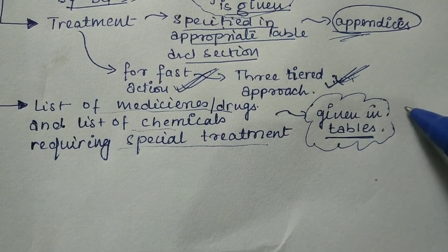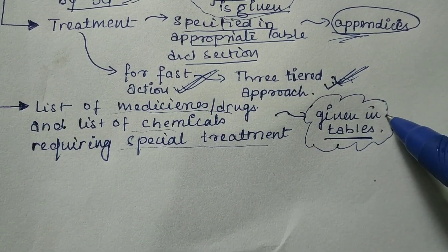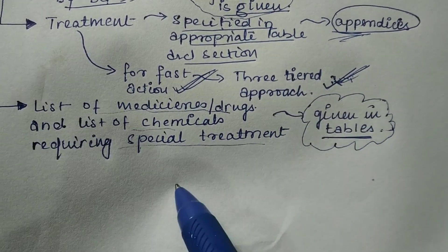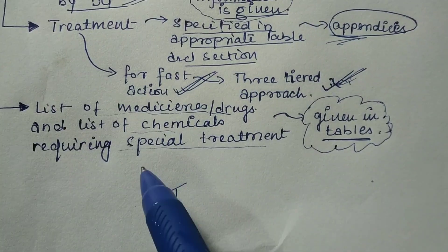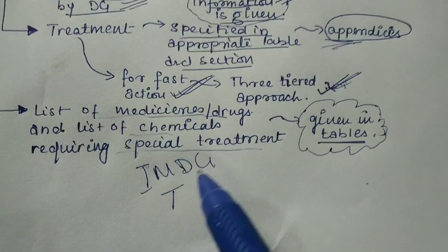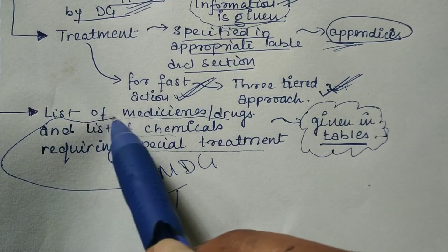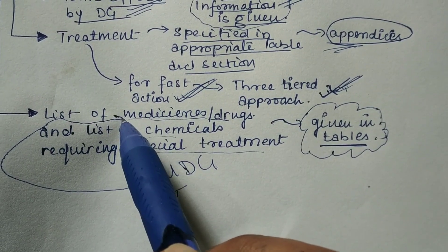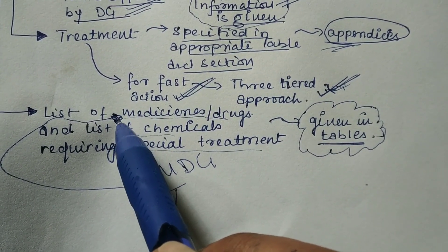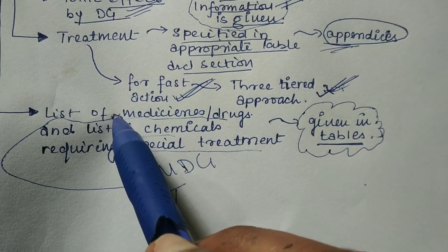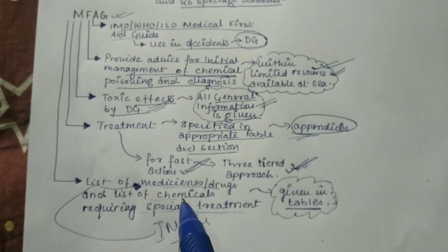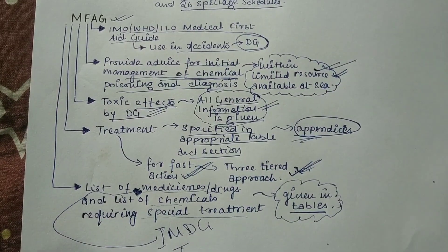Whenever you have visited the medical locker or hospital of a ship, you may have seen there is a special section for IMDG-related medicines. These are the medicines that need to be carried on board every ship that is going to carry or is carrying dangerous goods. This much is important from the topic of MFAG. Thank you.